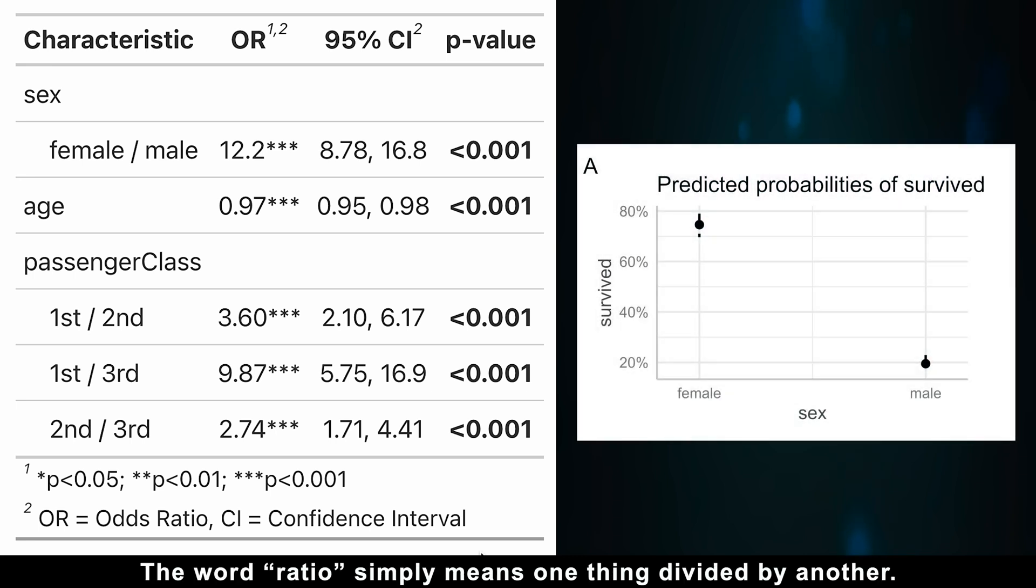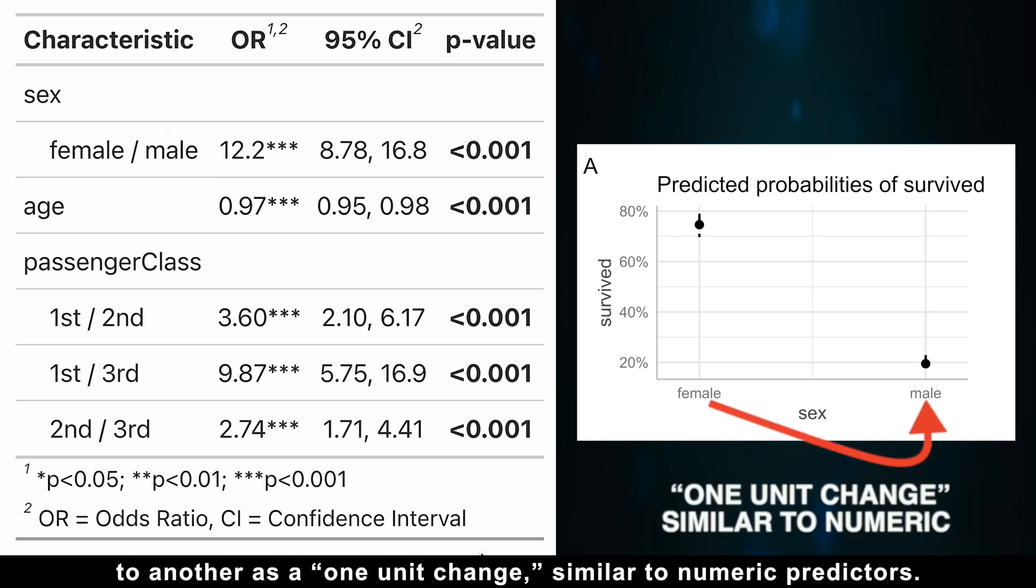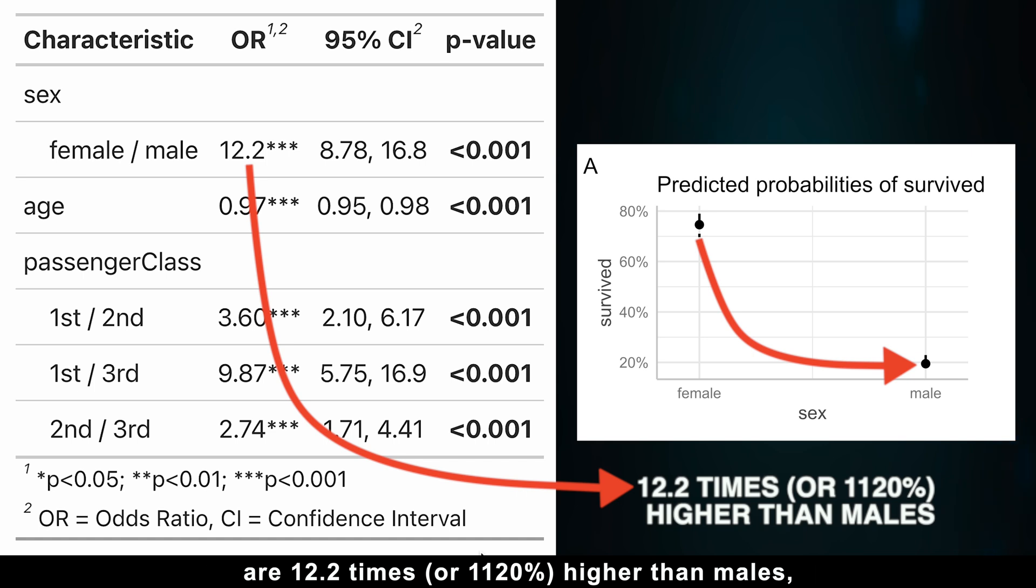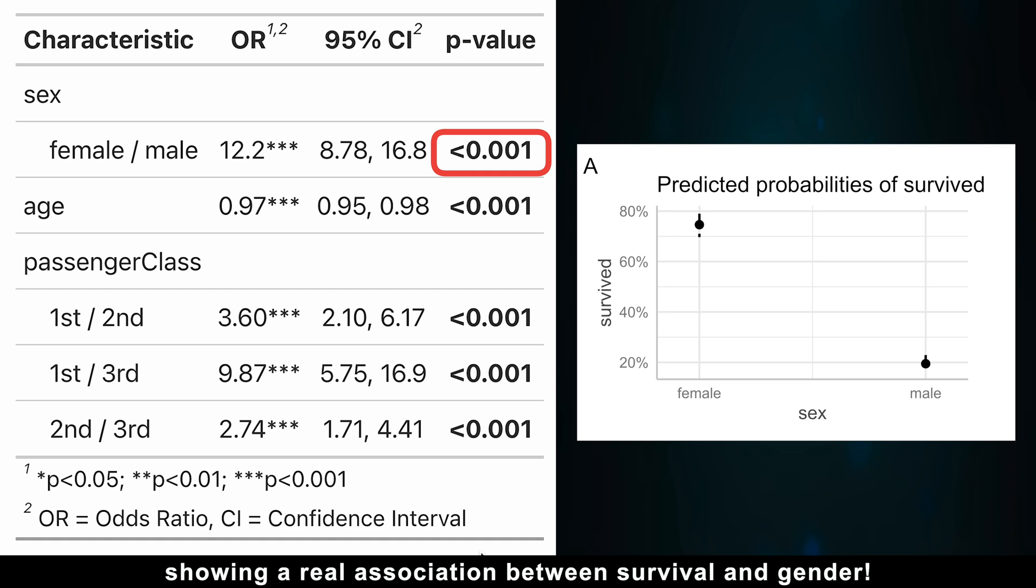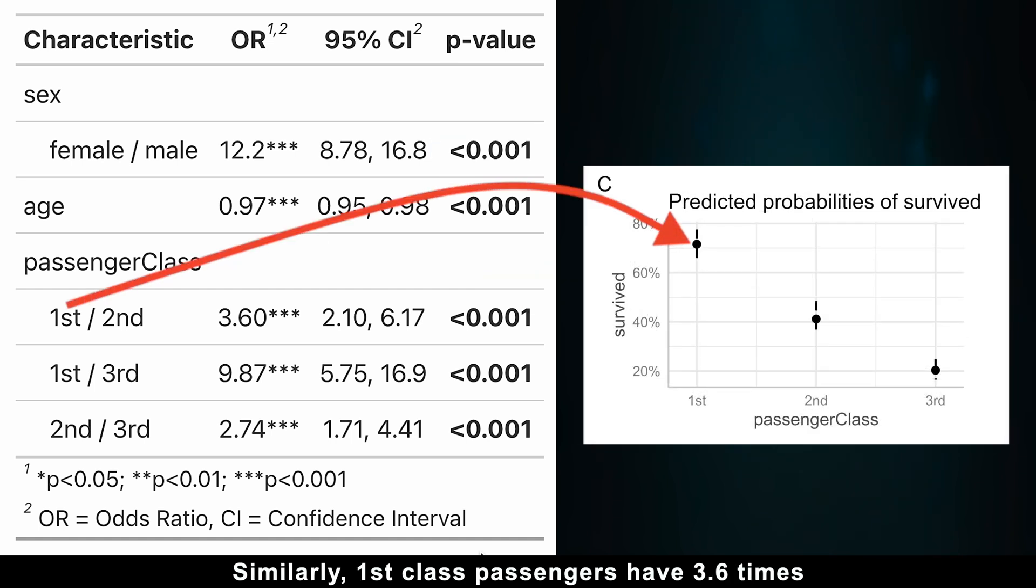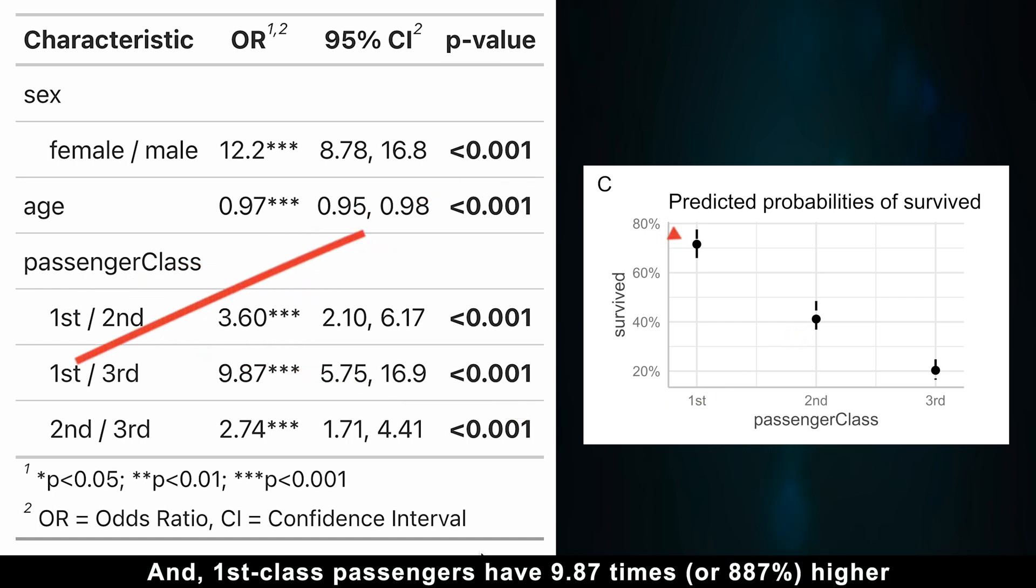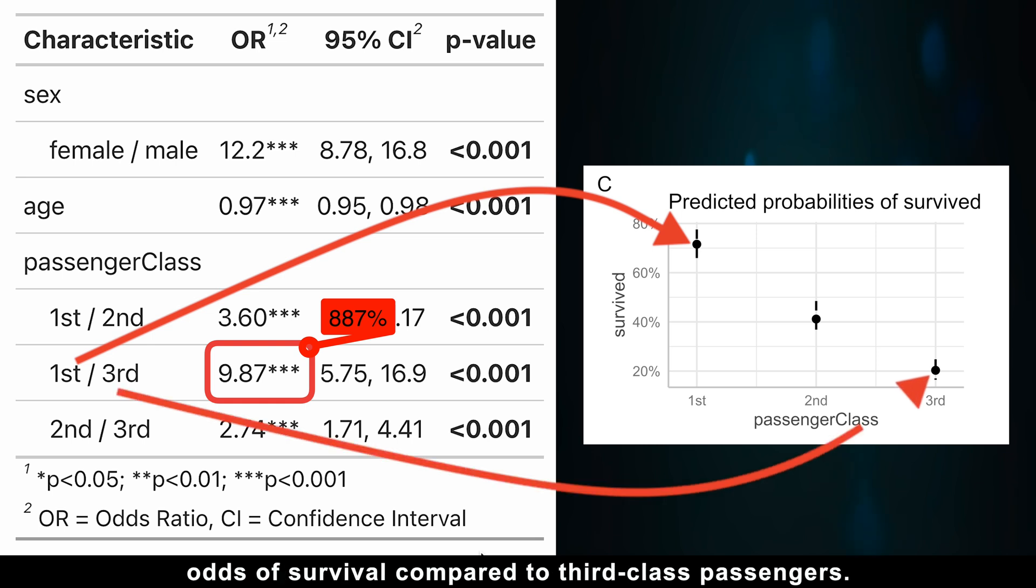Let's talk about interpreting categories. The word ratio simply means one thing divided by another. So, an odds ratio is the odds of survival for one category divided by the odds of survival for another. To make it even clearer, think of transitioning from one category to another as a one-unit change, similar to numeric predictors. For example, the odds of females surviving the Titanic are 12.2 times, or 1,120% higher than males, while keeping all other factors constant. This difference is highly significant, showing a real association between survival and gender. Similarly, 1st class passengers have 3.6 times, or 260% higher odds of survival compared to 2nd class passengers. And 1st class passengers have 9.87 times, or 887% higher odds of survival compared to 3rd class passengers.